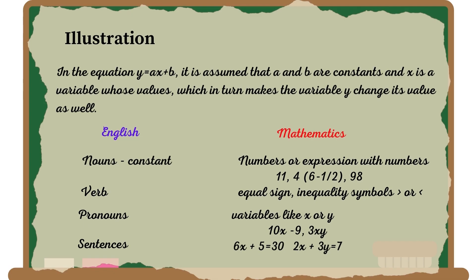Even though the words noun, verb, or pronoun are not used in mathematics, the similarities with the English language can be observed. For example, the nouns could be constants such as numbers like 11, 4, or 6 minus one-half, or 98. A verb could be the equal sign or the inequality symbols. And pronouns could be the variables like X and Y.